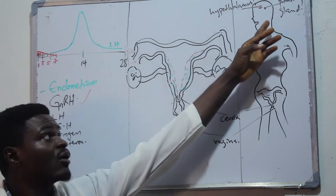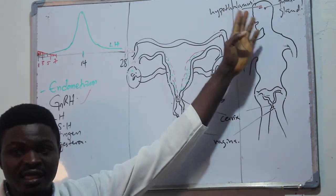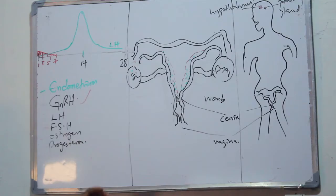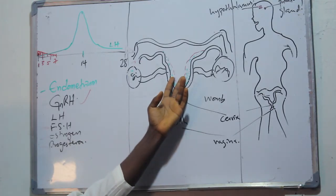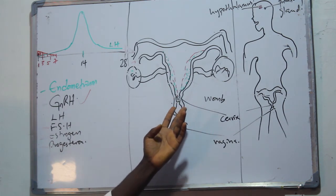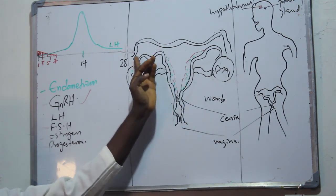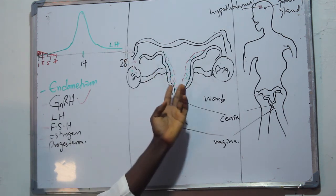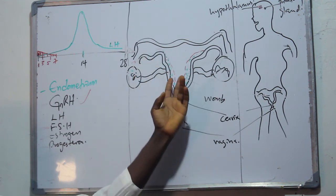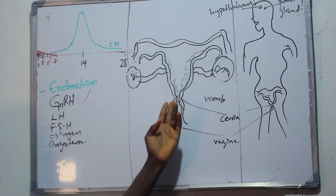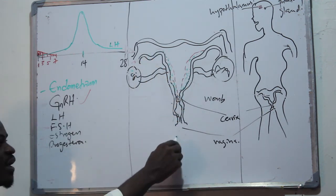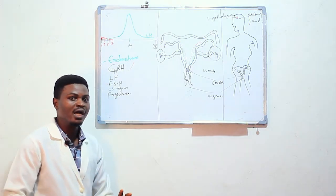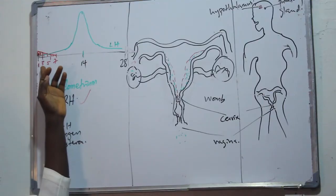The menstrual cycle begins with the shedding of the endometrium from the previous month. The endometrium is usually developed to be able to house or carry the fertilized egg that was released. In an event where there is no fertilization, the prepared endometrium will shed out in form of blood, and that is what you see when you begin to flow.